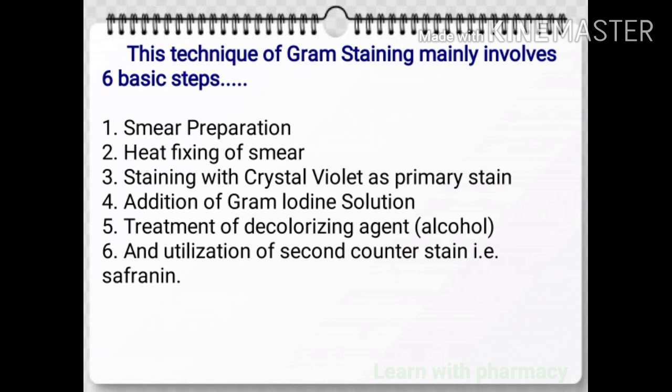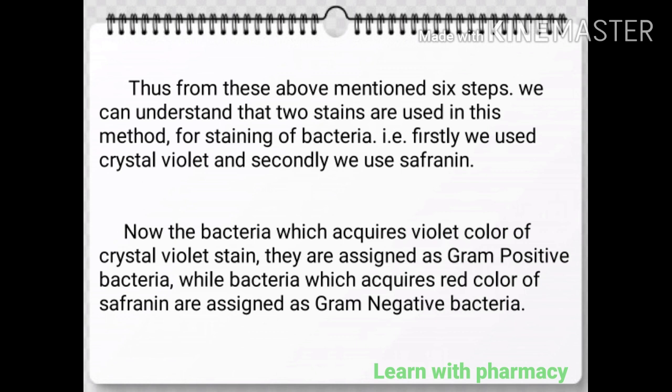First is smear preparation. Second is heat-fixing of smear. Third is staining with crystal violet as primary stain. Fourth is addition of Gram-iodine solution. Fifth is treatment of decolorizing agent, that is alcohol. Sixth is utilization of second counter stain, that is safranin.